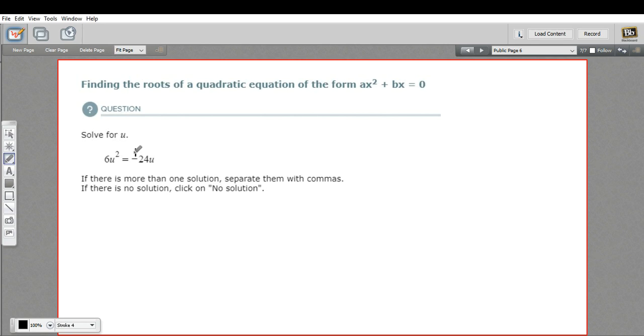I'm going to add 24u to both sides. If I do that, what I'll get on the left is 6u squared plus 24u equals zero. And that's the format we wanted in to factor.